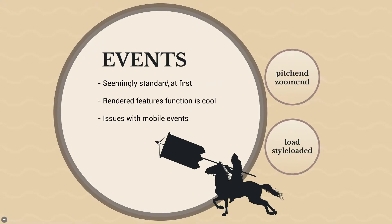They seem standard at first - clicks, hover, mouse overs. The queryRenderedFeatures function is cool. There's basically different ways to tell when things have rendered or when styles are loading - a huge array of events. I've personally found a few issues with mobile events, particularly around tapping and clicking. Mobile touch events on layers weren't quite firing reliably, so keep that in mind, though this may be fixed by the time you're watching this.